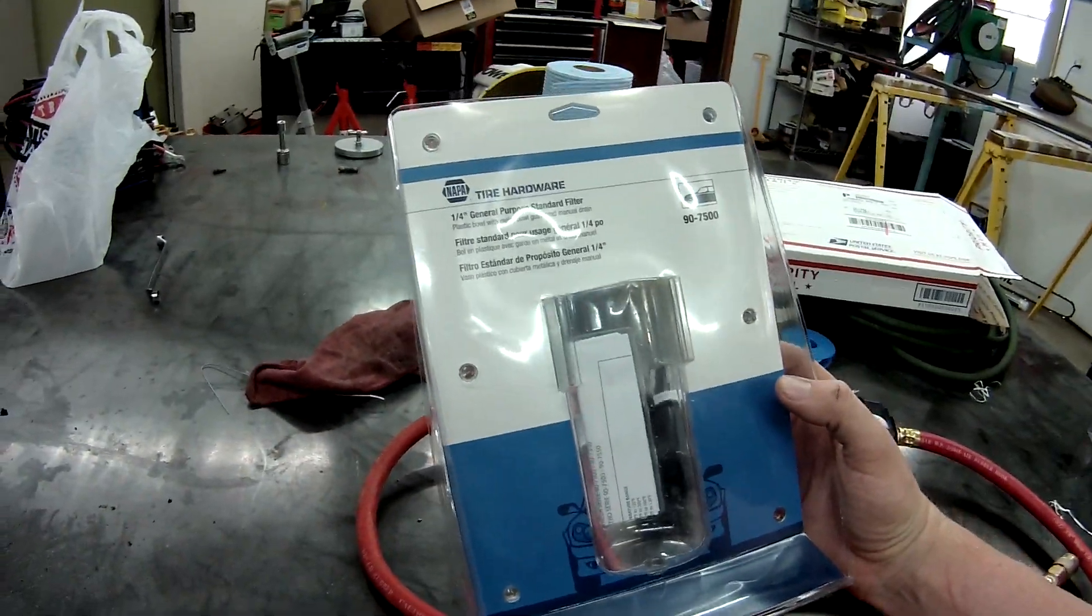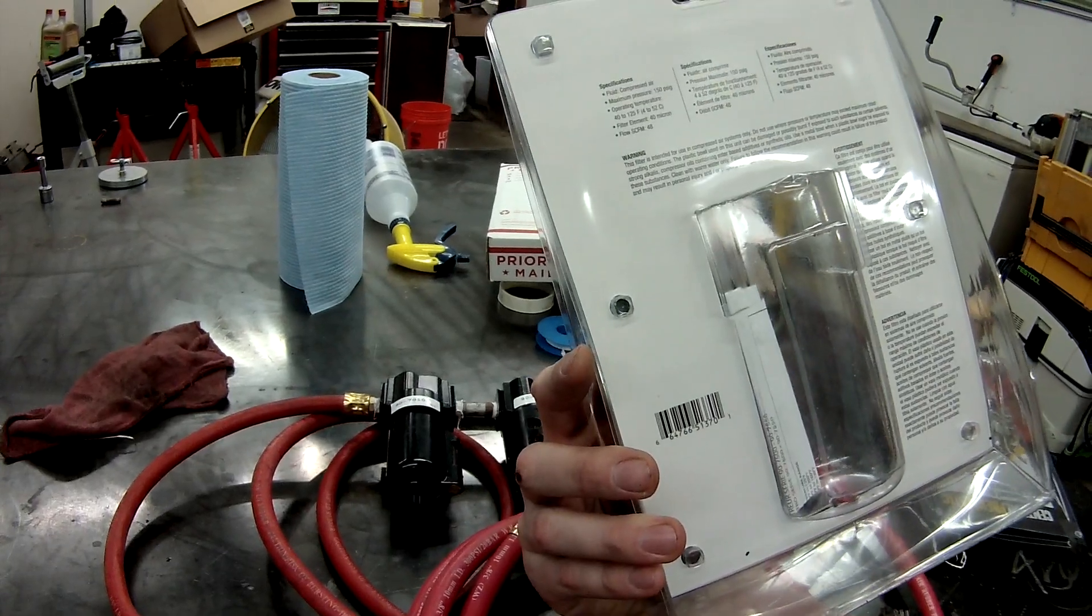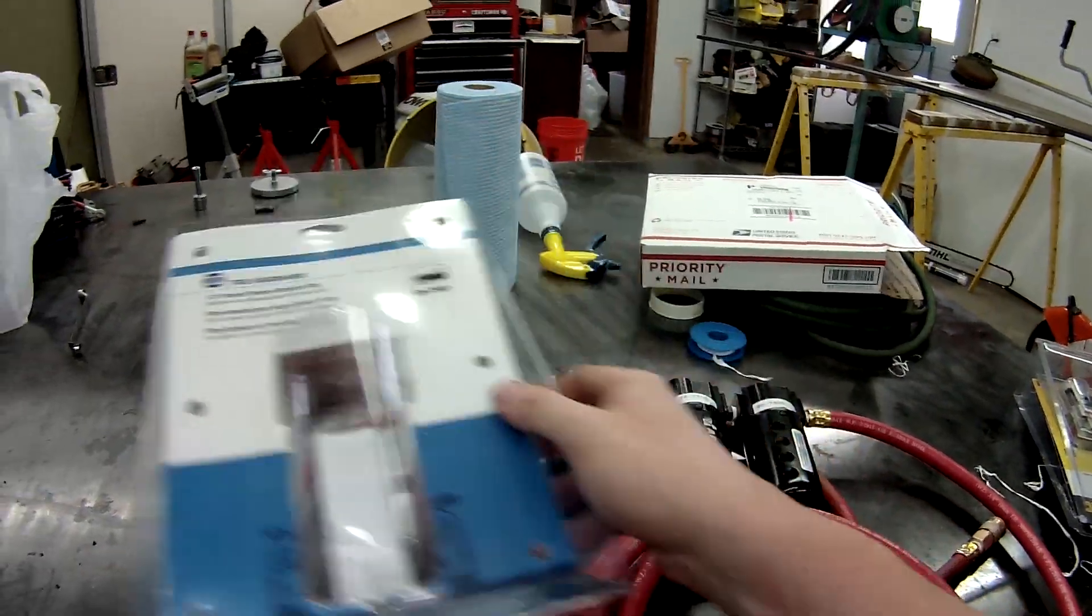Howdy YouTube! Darlington Farm here. Just out here in the garage and got a new package in the mail today. I picked up a Napa air water separator here off eBay and I'll show you what I'm using these things for.